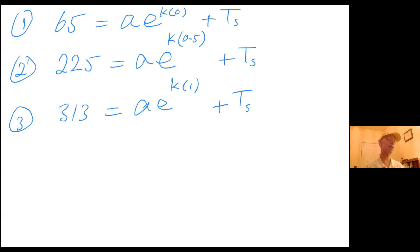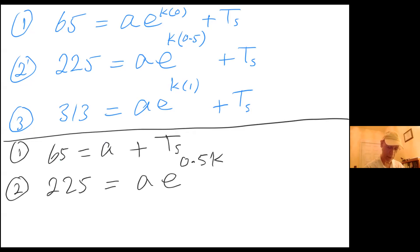So I'm going to go ahead and simplify this. I'm going to change number 1 to 65 equals A plus T sub s, since e^0 is 1. So the second one, 225 equals A times e^(0.5k) plus T sub s. And the third one, 313 equals A times e^k plus T sub s.